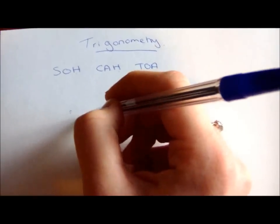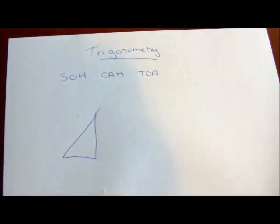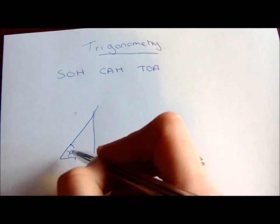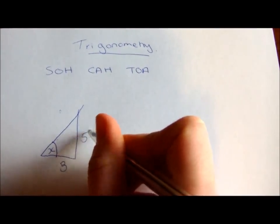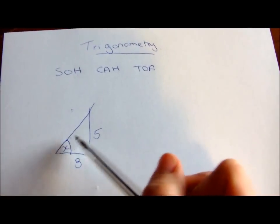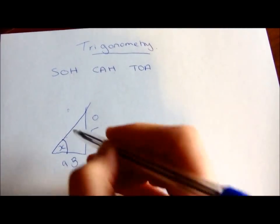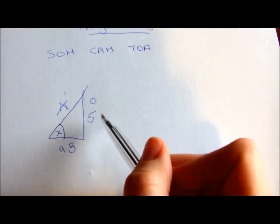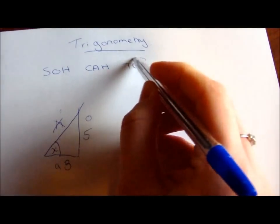So if I give you a question, for example, here's a triangle. In this triangle we have an angle that is x, a side that is 3, and a side that is 5. We can see that this is the angle we're finding out, so that is the opposite — label that O. This is adjacent, and then that is hypotenuse. We haven't got that, so we can cross that out. And then we've got the opposite and adjacent, which means we're going to use tan.